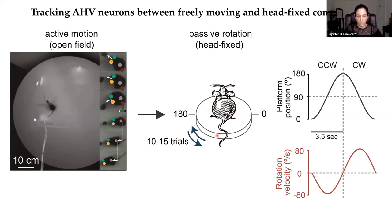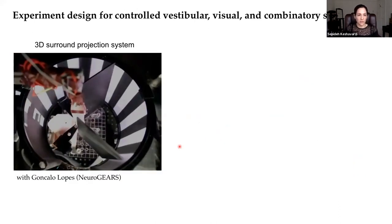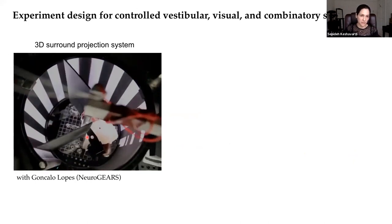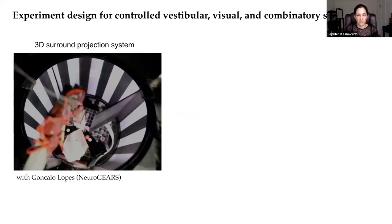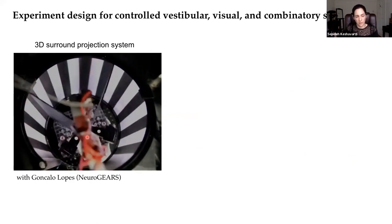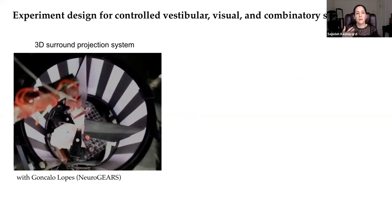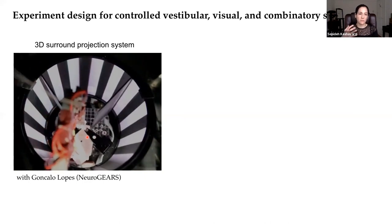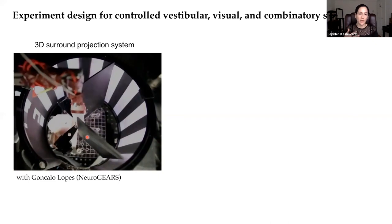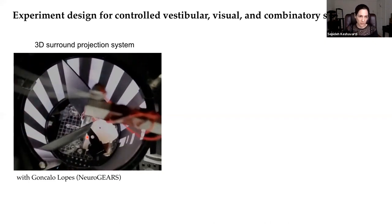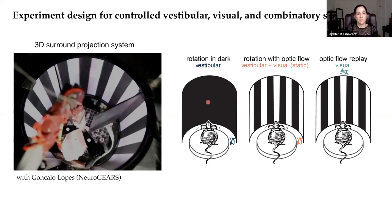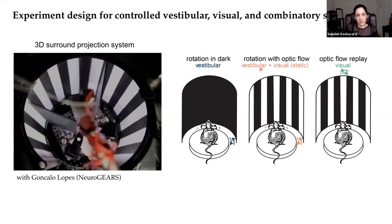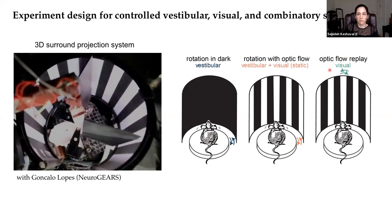In this way, we could get rid of any locomotion or voluntary head movement contribution. The rotation setup: a mouse is head-fixed in the center of an arena, which is rotated clockwise and counterclockwise, either in complete darkness or in the presence of a vertical grating surrounding the animal, which produces optic flow in addition to vestibular stimulation. Under a third condition, the platform is stationary and the mouse views the vertical grating moving at the same rotation profile, just mimicking the optic flow component. So the three conditions are: rotation in the dark (vestibular only), rotation with optic flow (vestibular plus visual), and replay of optic flow (vision only).